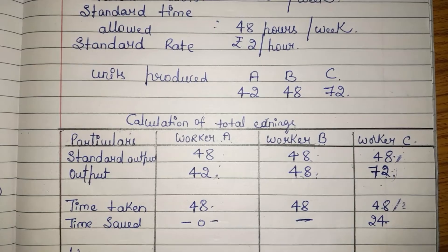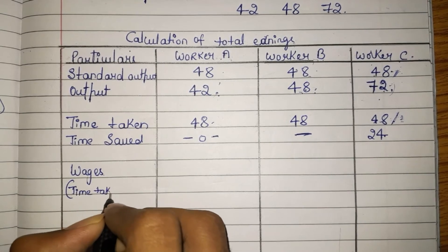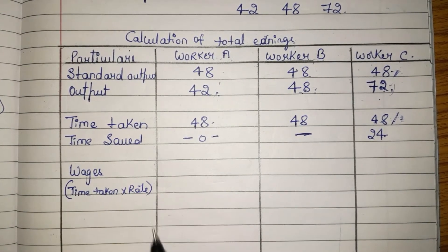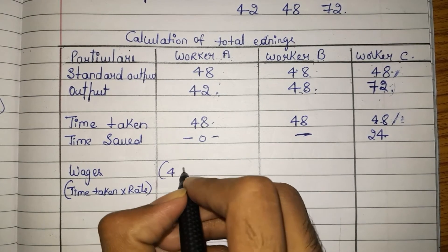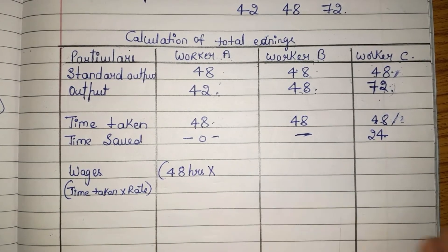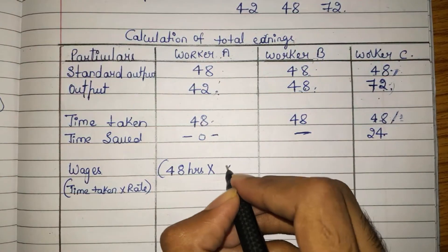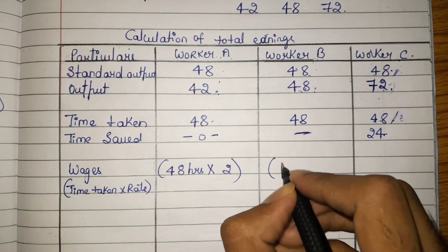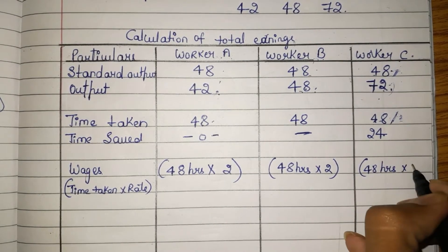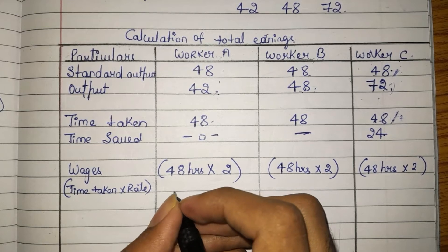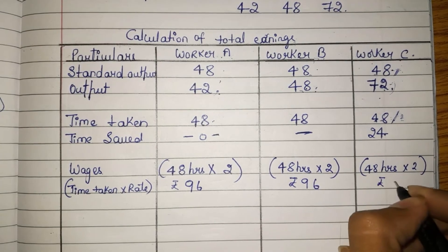Now for wages. The formula for wages is time taken multiplied by rate. Worker A has taken 48 hours at a rate of rupees 2, so wages = 48 × 2 = rupees 96. Worker B has also taken 48 hours at rupees 2, so wages = rupees 96. Worker C has also taken 48 hours at rupees 2, so wages = rupees 96.